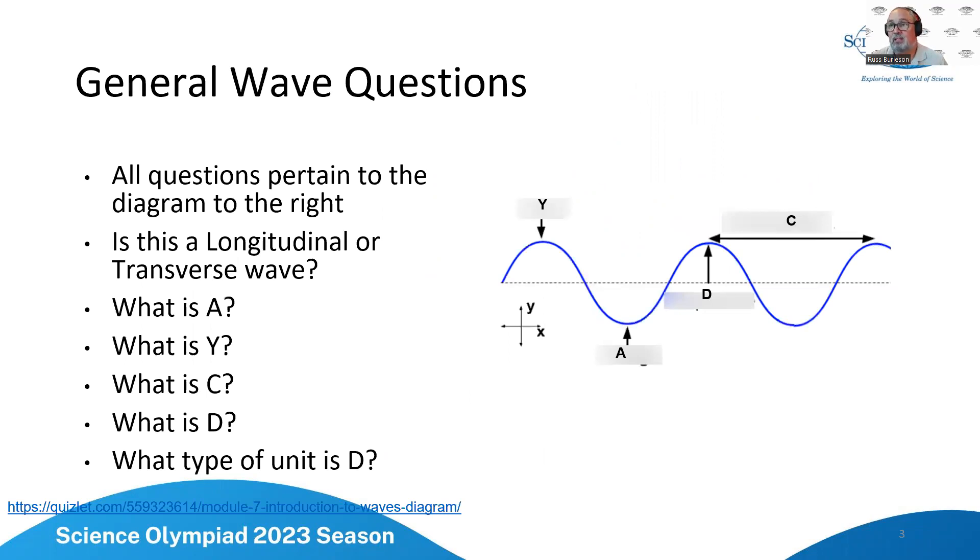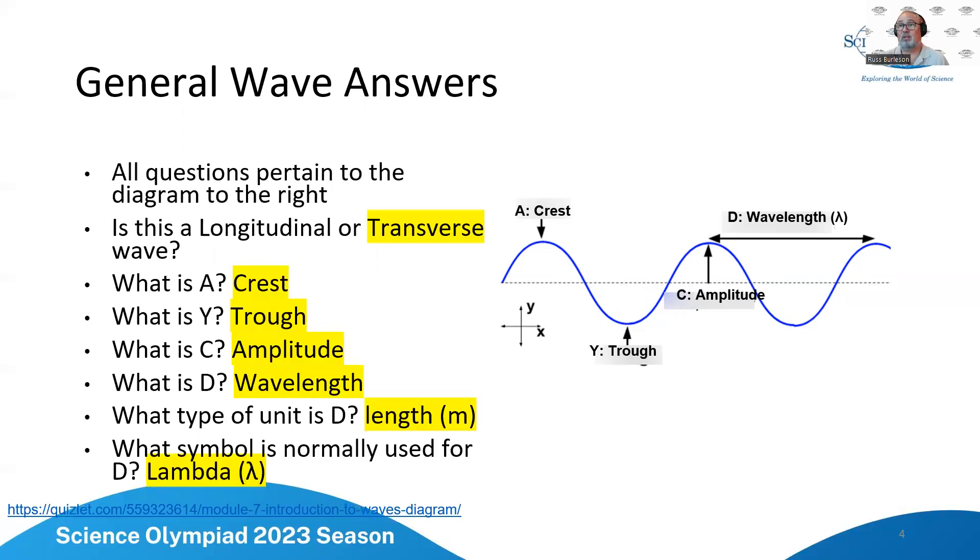All the questions pertain to the diagram on the right. Is it a longitudinal or a transverse wave? What is A in the diagram? What is Y in the diagram? What is C in the diagram? What is D in the diagram, or excuse me, what type of units are D? So let's look at it.